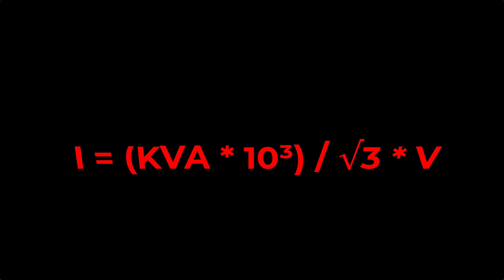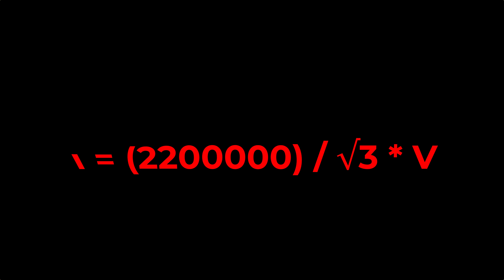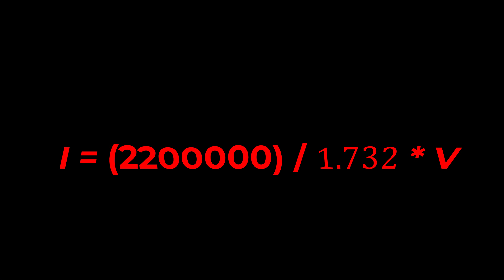We will calculate from 2.2 MVA to VA using the formula. Since KVA × 10³ = KVA in VA, for MVA we use MVA × 10⁶. So 2.2 MVA × 10⁶ = 2,200,000 VA. We then divide by √3 × V. √3 equals 1.732, and V is 11 KV, which we write as 11,000 V. The answer will be 115 A.